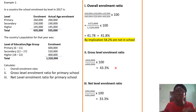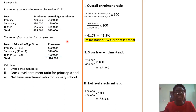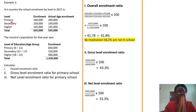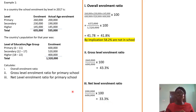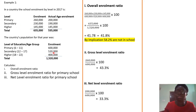For the net enrollment ratio at the primary school level, we use the actual number — those who fall within the primary school age of 6 to 11 — which is 200,000. So: 200,000 over 600,000 gives us 33.3%. For secondary school, the gross would be 230,000 over 520,000, and the net would be 190,000 over 520,000. You do the same for the higher level.